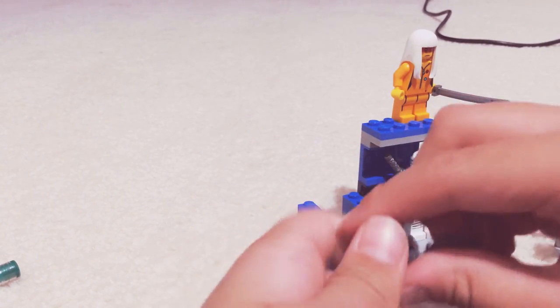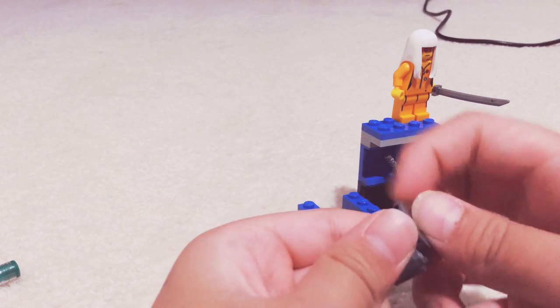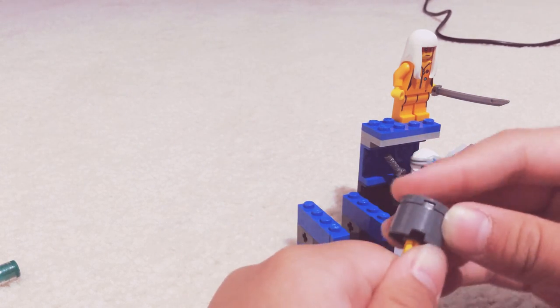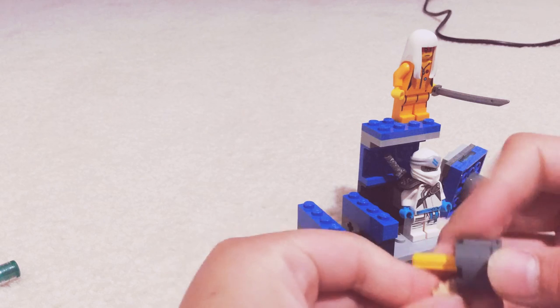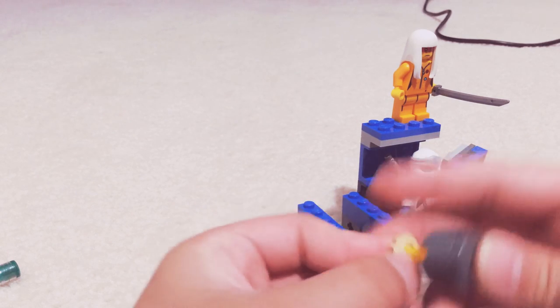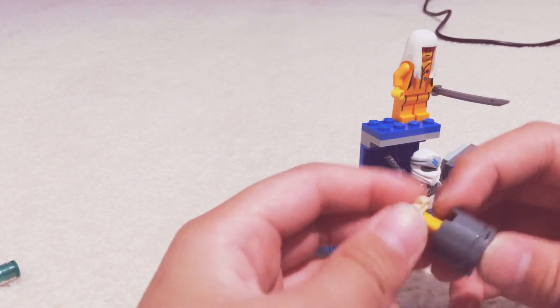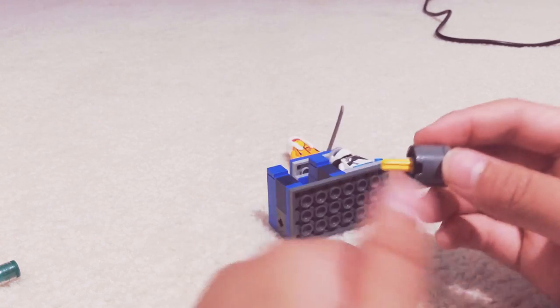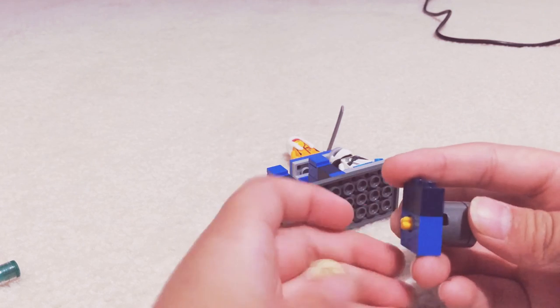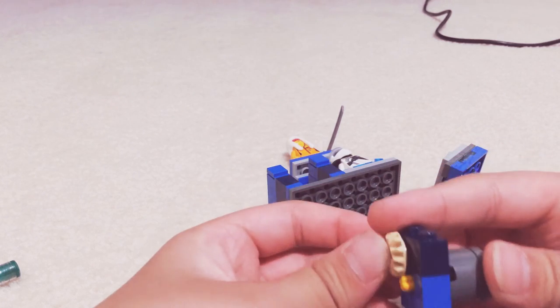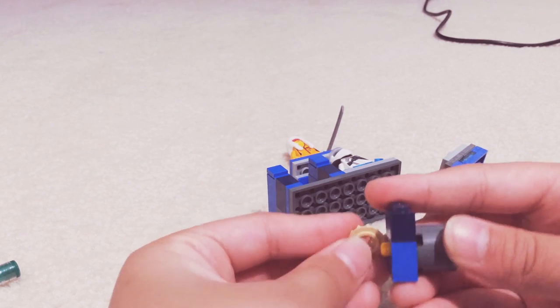Now we're going to make a very crucial part. So we're going to take a 1x2. Snap it on. We're going to take this tan gear. We're going to be using two tan gears. So if you don't think you have this, then I'm sorry. Put that tan gear over here.